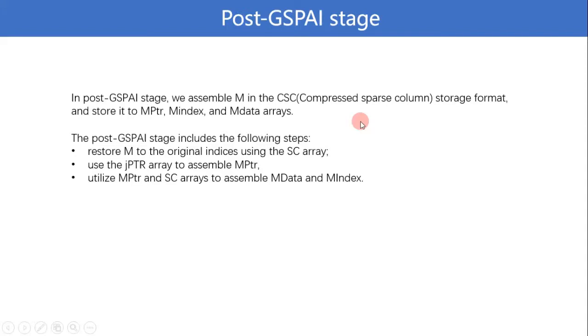In the final stage Post-GSPAI, we assemble M in the compressed sparse column storage format and store it to mptr, mindex, and mdata arrays. First, we restore M to the original indices using the SC array, and then use the jptr array to assemble mptr, and utilize mptr and SC arrays to assemble mdata and mindex.